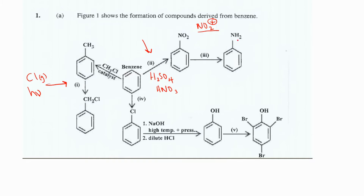In step three we're taking the nitrobenzene we just formed and converting it to aminobenzene, traditionally known as aniline. In this process we substitute two oxygen atoms for two hydrogen atoms — losing oxygen and gaining hydrogen. This is reduction. Since this is a reduction process, we need a reducing agent, and tin in hydrochloric acid can be used here.